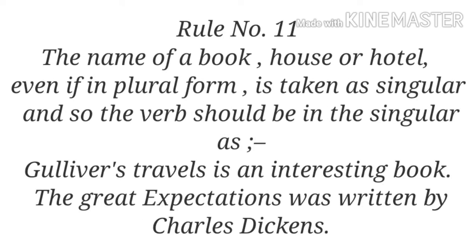Rule number eleven: the name of a book, house or hotel, even if in plural form, is taken as singular, and so the verb should be in the singular. Example one: 'Gulliver's Travels is an interesting book.' Example two: 'Great Expectations was written by Charles Dickens.' Gulliver's Travels and Great Expectations are names of books which are in plural form but refer to a single book, so they take a singular verb — 'is' in present and 'was' in past.